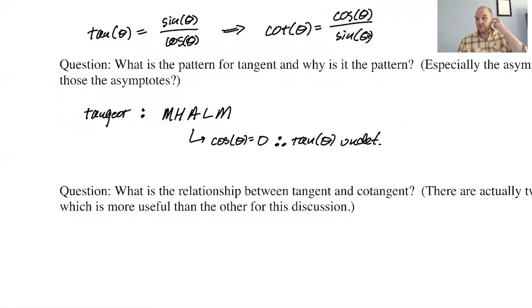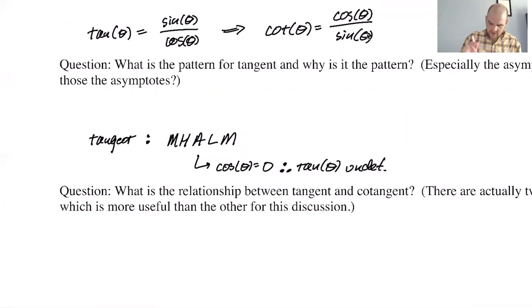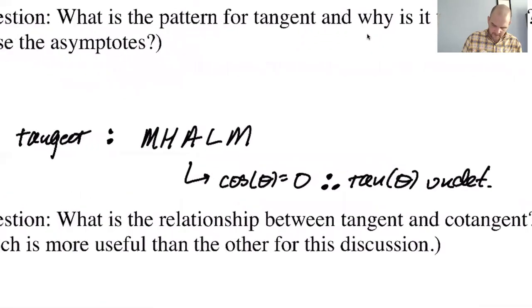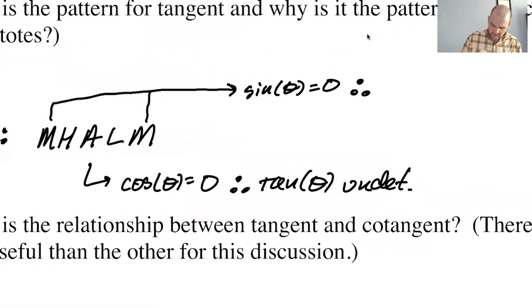Now also, why do you get the middle points? So the middle points come because sine of theta equals zero, which means that tangent of theta will equal zero.